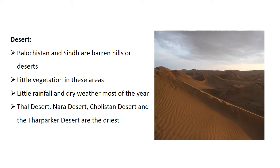Balochistan and Sindh have barren hills and deserts. There is little vegetation in these areas, very little rainfall, and they remain dry most of the year. The Thal Desert, Cholistan Desert, Nara Desert, and Thar-Parkar Desert are the driest deserts of the country.